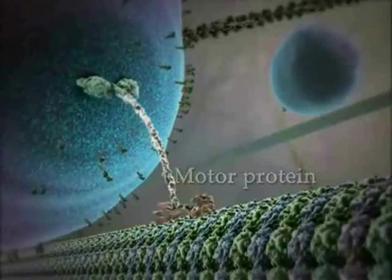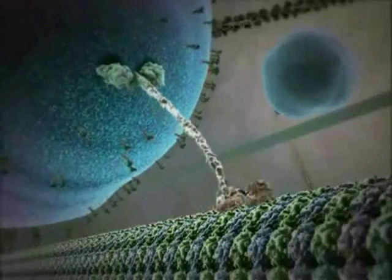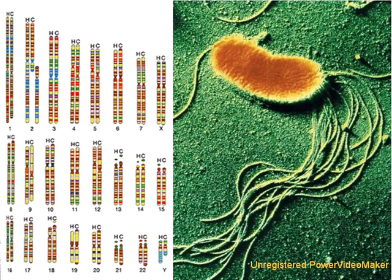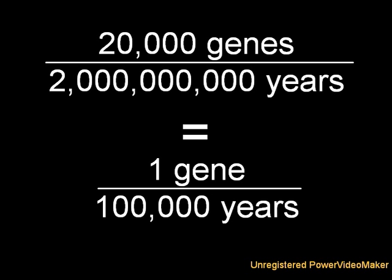But where did this diverse array of proteins, and in turn genes, come from? The human genome contains some 25,000 genes, but bacteria only contain between 1,000 and 6,000 genes. If the theory of evolution is correct and humans share a common ancestor with bacteria, then over the past 2 billion years we must have gained at least some 20,000 genes. If you do the math, that's only one new gene every 100,000 years.